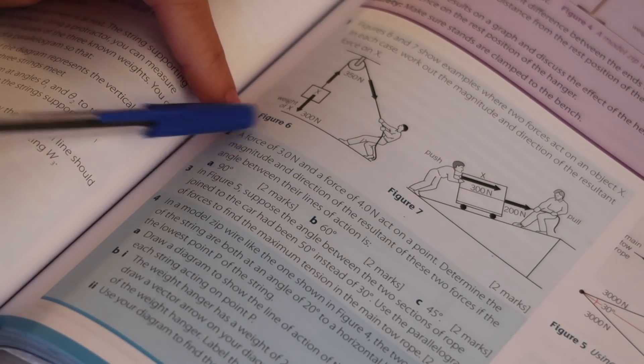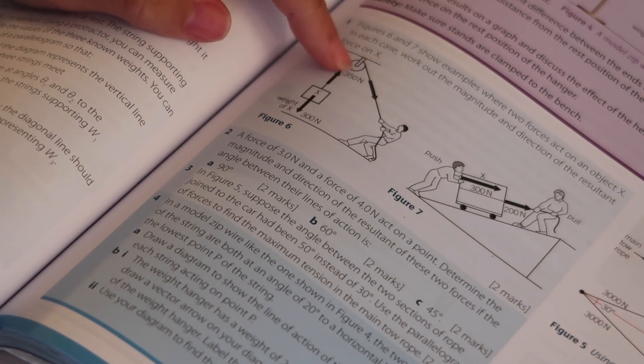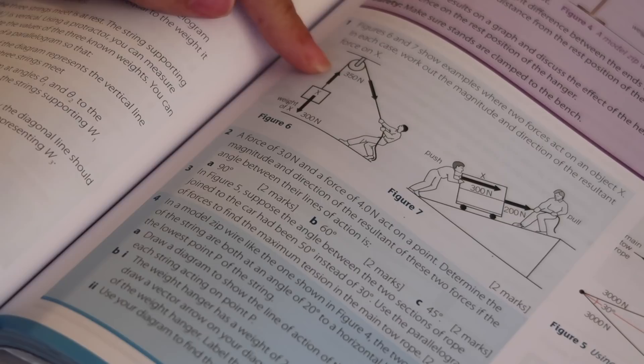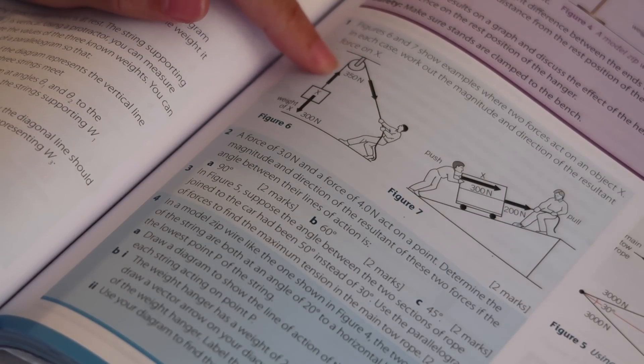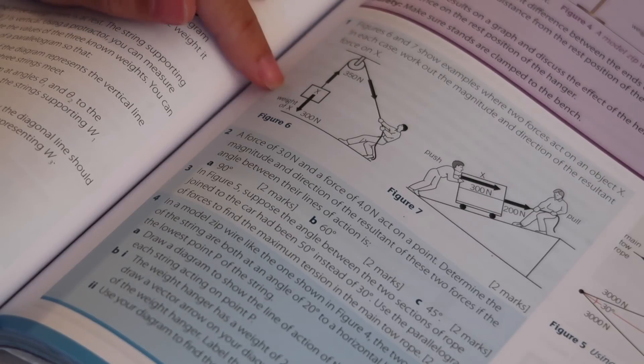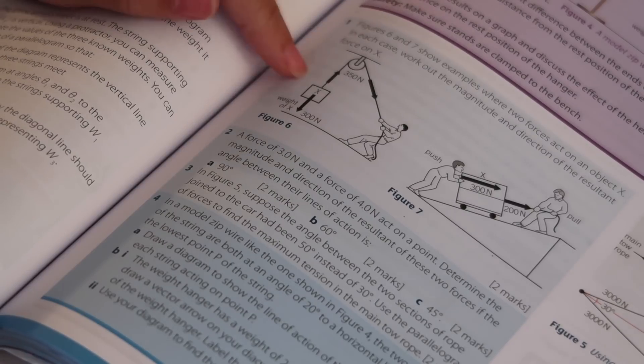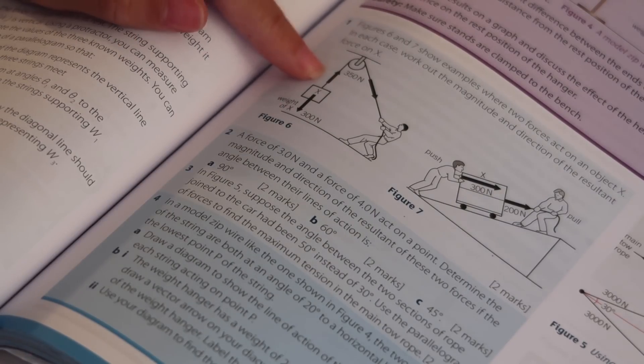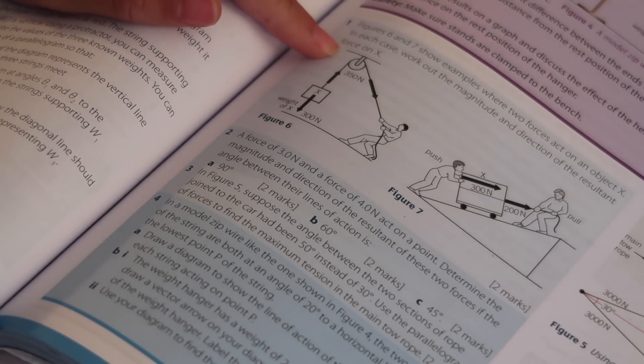You can see that this guy is pulling on a pulley and he's pulling with a force of 350 newtons. But the crucial thing is that pulley is attached to here which means his force is actually pulling this weight upwards. Now the weight of the box is pulling the box down by 300 newtons. So what's the difference in those two numbers? Well it's 50 newtons and obviously that will be up. So your answer is 50 newtons upwards.